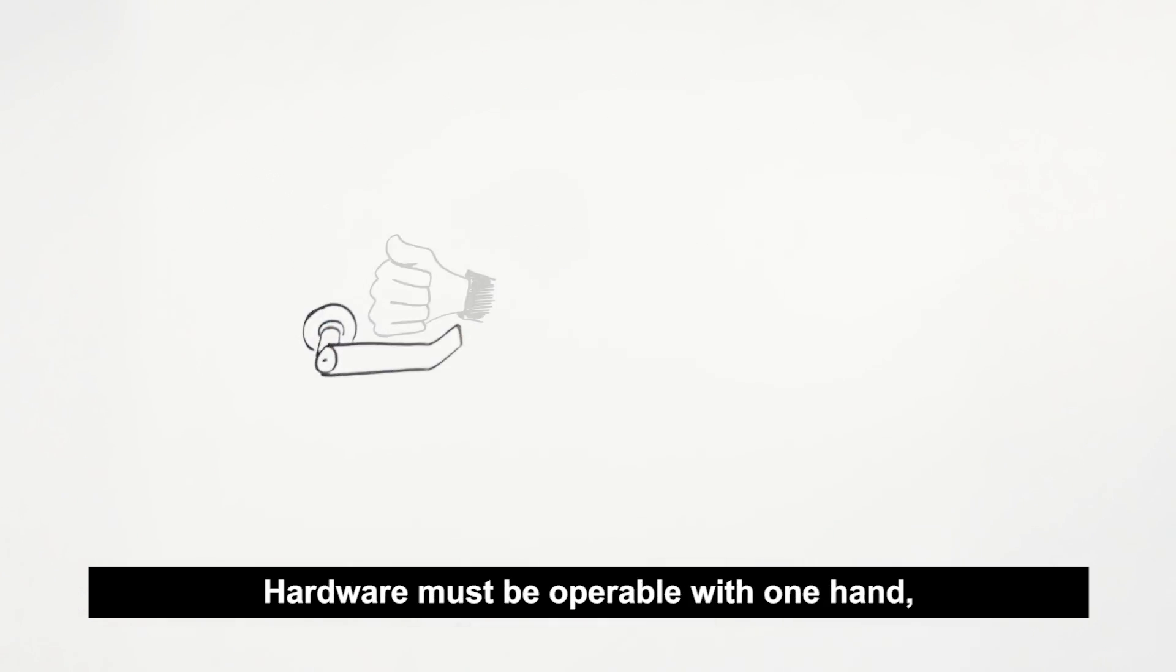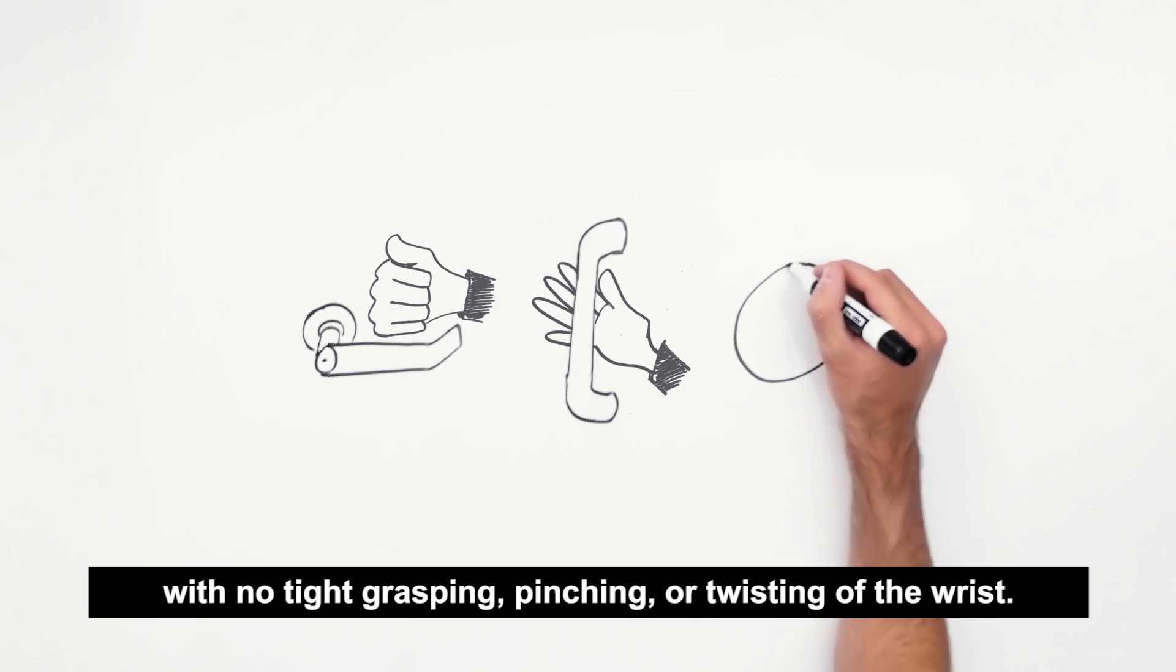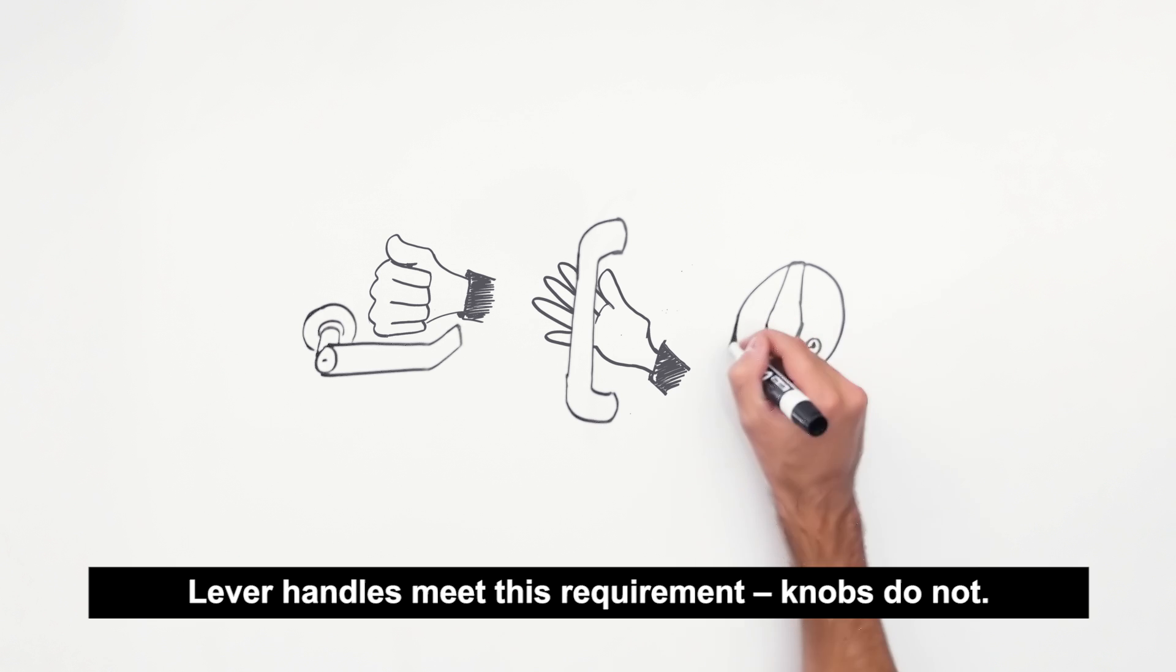Hardware must be operable with one hand, with no tight grasping, pinching, or twisting of the wrist. Lever handles meet this requirement. Knobs do not.